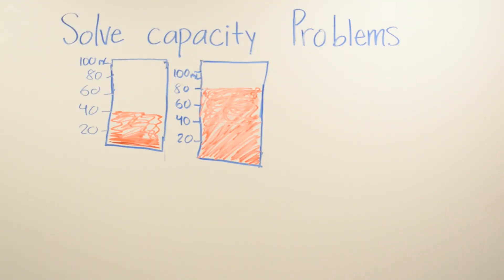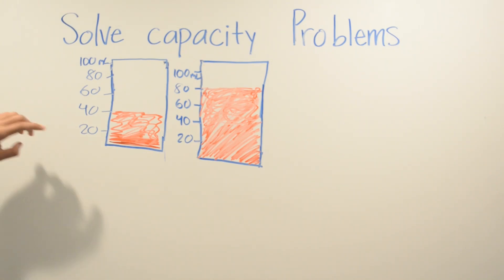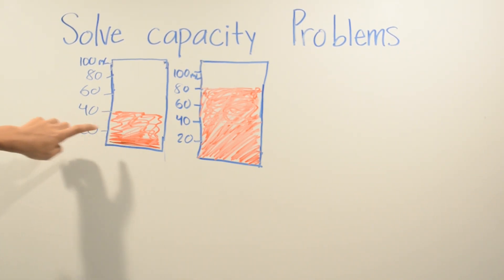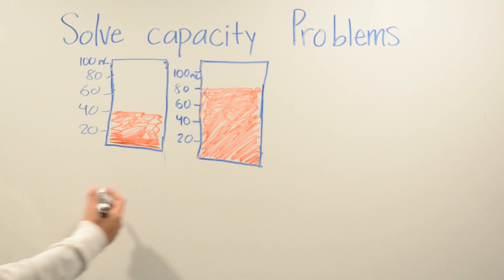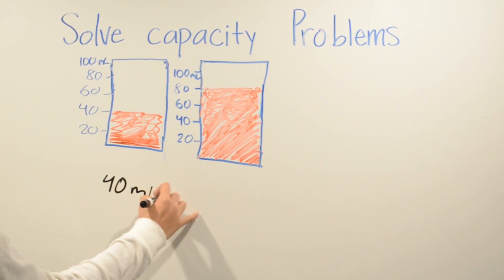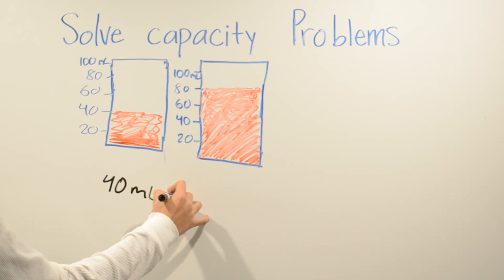For this problem, we have to find the total amount of milliliters combined. So we have to find our first number. Is it 20? No, because it keeps on going. Is it 40? Yes, because it stops right there. It's going to be 40 milliliters plus...